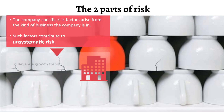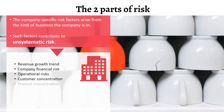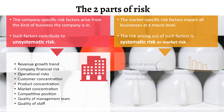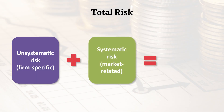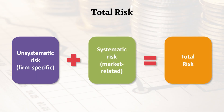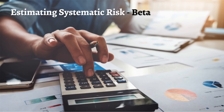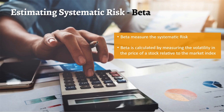There are two parts to risk: company-specific, which contributes to the unsystematic risk, and market-specific, which accounts for the systematic risk. Unsystematic risk together with systematic risk form total risk. We can use the co-movement of a stock's return with a market index to estimate the systematic risk. This measure of systematic risk is popularly called the beta.